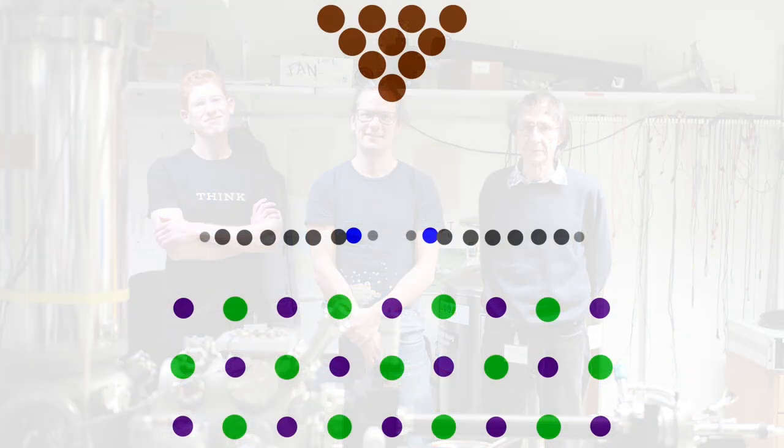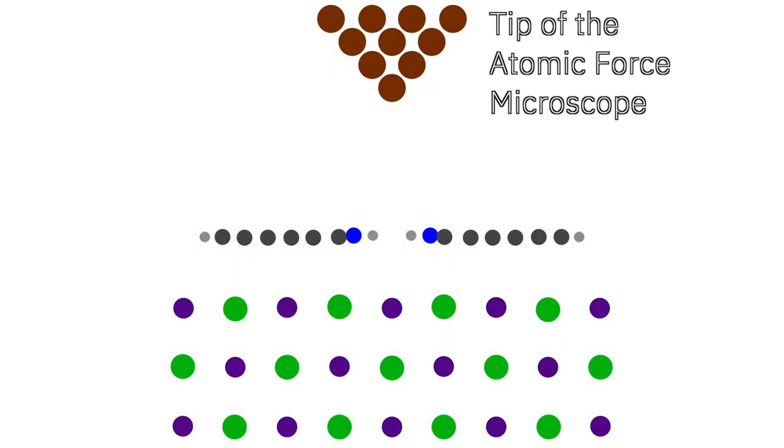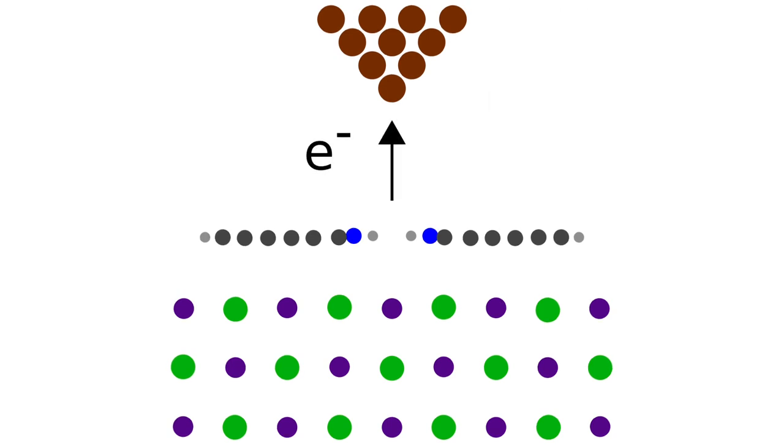IBM researchers asked a simple question: How to quantify the relaxation of nuclei in a molecular system? To accomplish such a goal, an atomic force microscope operated at low temperature and ultra-high vacuum is employed.